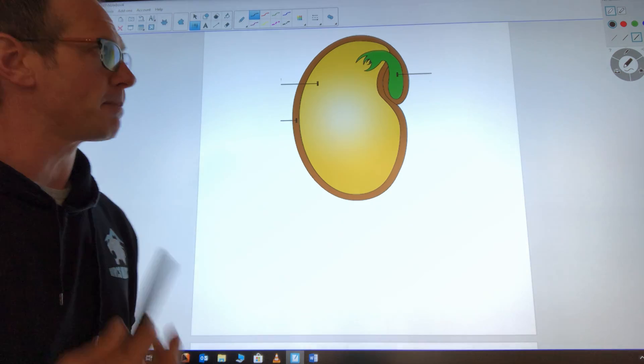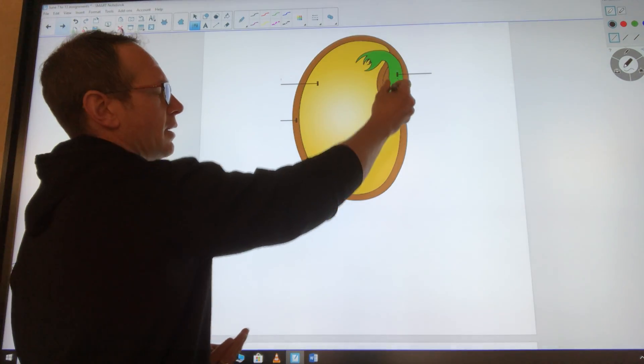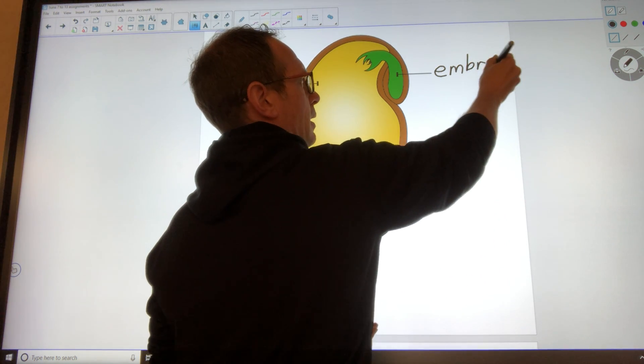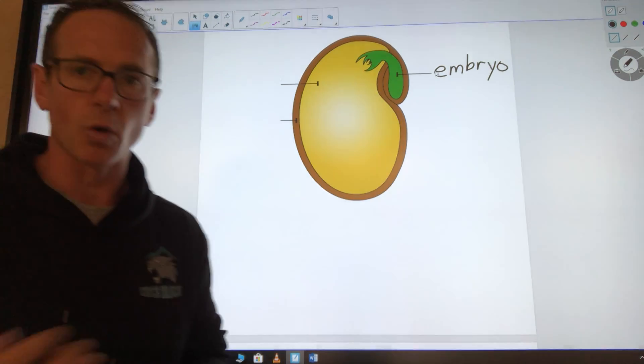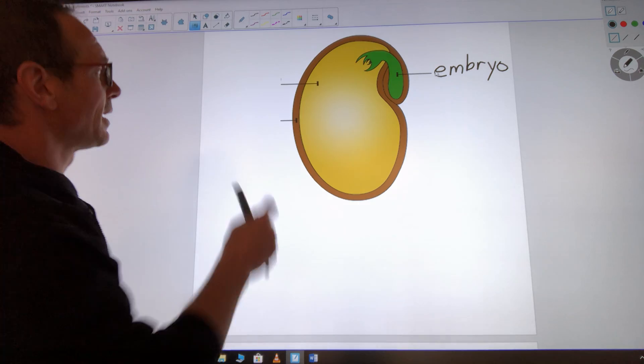So the first thing we have is this little part right here, and that's called the embryo. The embryo is just what the new plant will grow from. It's like a baby plant.